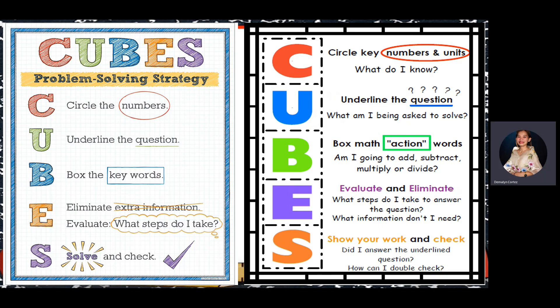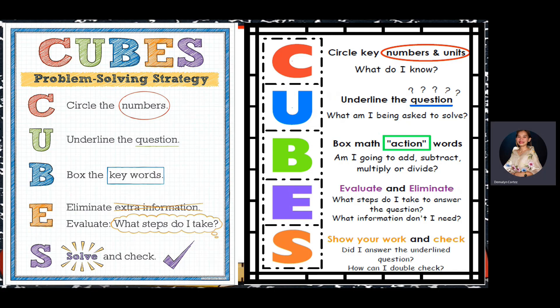In division, you can also check if your answer is correct by multiplying the quotient and the divisor. Then go back to the problem, read it, and check if you really answered the given question.